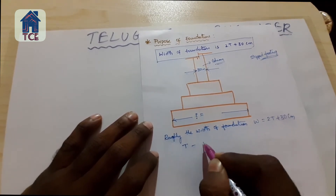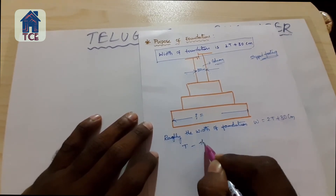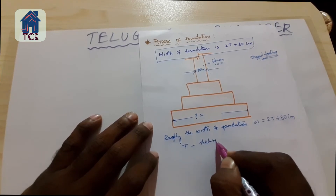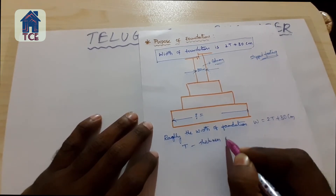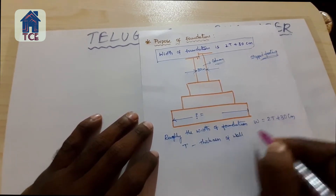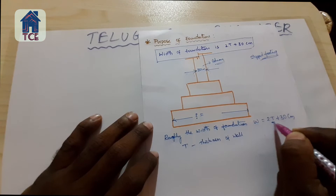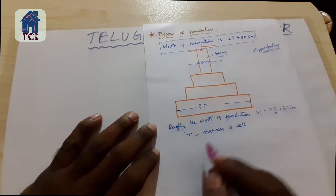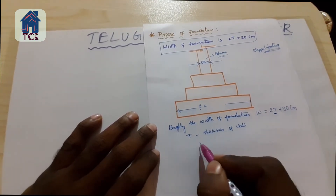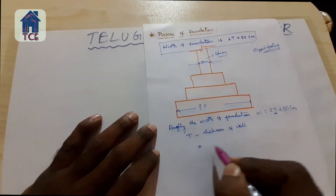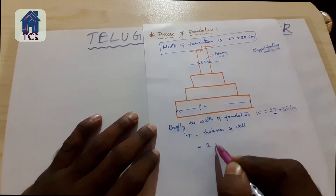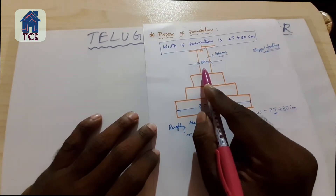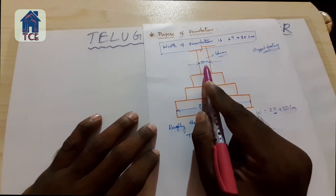The thickness of wall is T. We are going to calculate the thickness of wall. The thickness of wall relates to the column.